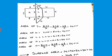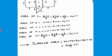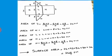Rectangle K has sides 8 and 9, so the area equals 8 times 9, which is 72. Rectangle L has sides 6 and 9, so 6 times 9 equals 54. Rectangle M has sides 9 and 10, so 9 times 10 equals 90. The surface area is the sum: 24 plus 72 plus 54 plus 90 plus 24 equals 264.